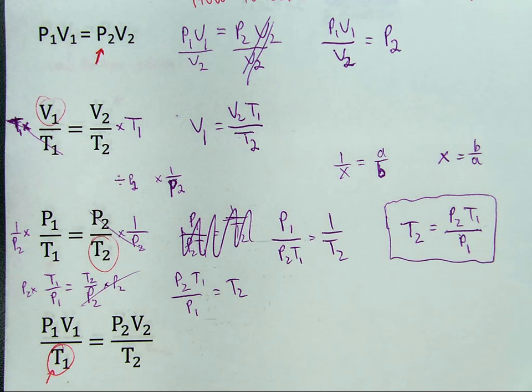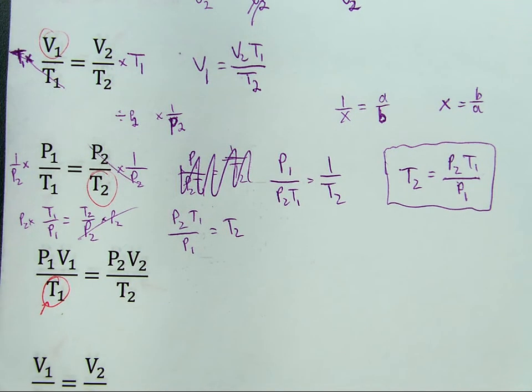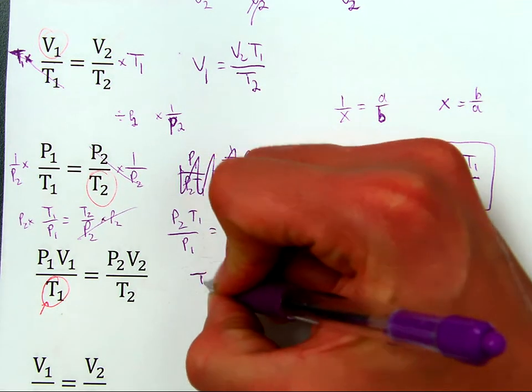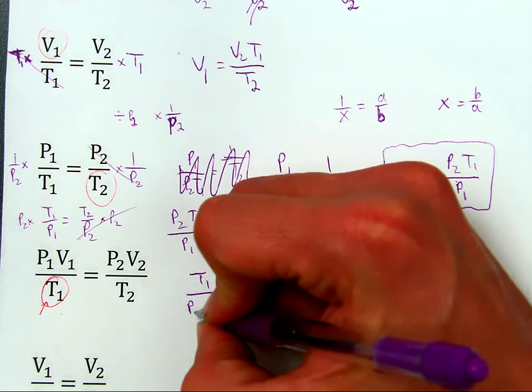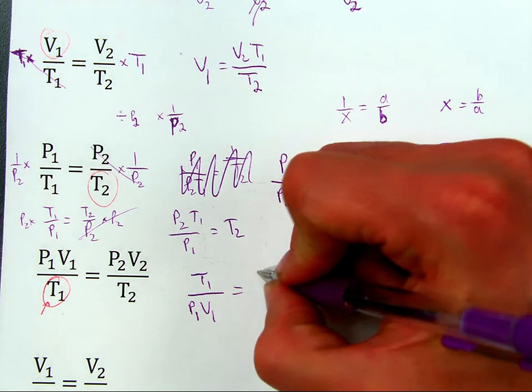Alright. I'll start by making it easy on myself. Flip the whole thing over upside down. So, that means, this is now on top, T1, these are on bottom, P1, V1 equals, and I'll flip this over also, T2 over P2, V2.